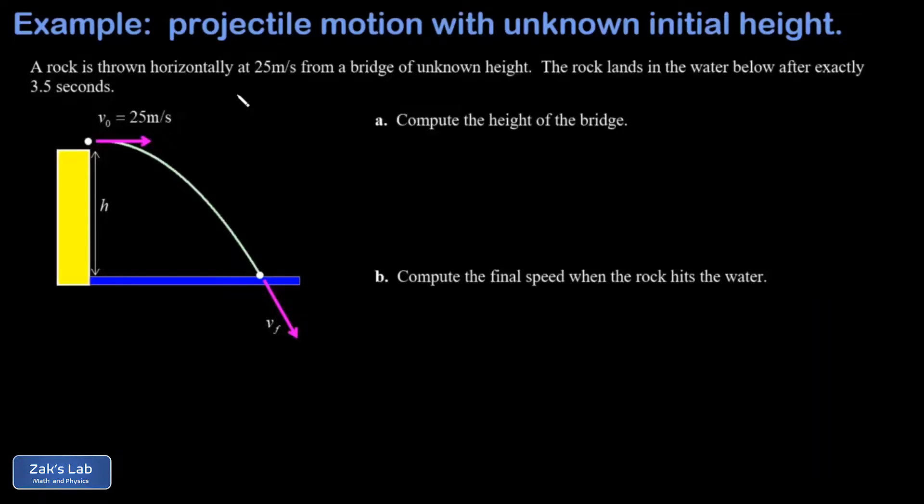In this video, we're given that a rock is thrown horizontally off of a bridge with a speed of 25 meters per second, and the height of this bridge is unknown. What we know is the time it takes for that rock to hit the water down below.